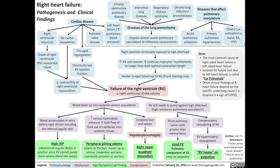Blood backing up into the systemic vasculature also increases the venous hydrostatic pressure, which increases the bulk flow of fluid out of the capillaries into systemic tissues. That results in peripheral pitting edema, and since fluid is gravity dependent, the edema will start from the feet and move up as venous congestion worsens, eventually presenting as ascites. Finally, blood backing up into the systemic venous vasculature also congests the liver and the spleen, enlarging them and causing hepatosplenomegaly, which activates the pain receptors in that area of the abdomen, resulting in right upper quadrant abdominal discomfort.